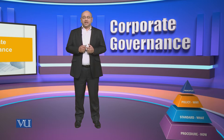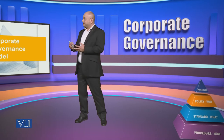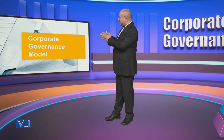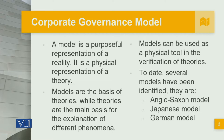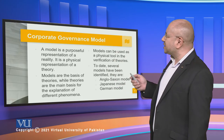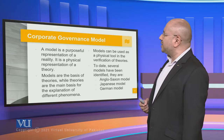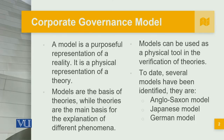We will see how these models tend to affect the organization and what are their different implications. A model is a purposeful representation of a reality — a physical representation of a theory. Models are the basis of theories, while theories are the main basis for explaining different phenomena. Several models have been identified: the Anglo-Saxon model, the Japanese model, and the German model.